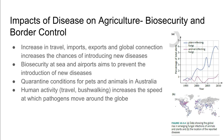The next impact is due to biosecurity and border control. Due to the increase in travel, imports, exports and global connection, we have seen an increase in the chance of introducing new diseases within a population. This is the reason why there is biosecurity at sea and airports, which aims to prevent the introduction of any new diseases into a population.